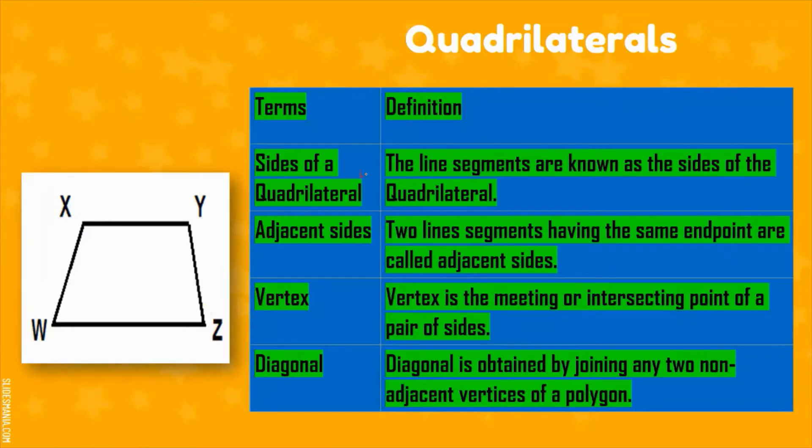Now we will be learning something more about quadrilaterals. We should know what are the sides of a quadrilateral, adjacent sides, vertex, and diagonal. Here we see that these line segments are known as the sides of quadrilateral. Adjacent sides are like this side and this side. They are adjacent to each other because they share a common endpoint here. So these two line segments having a common endpoint are called adjacent sides.